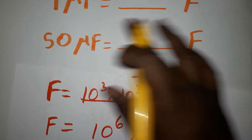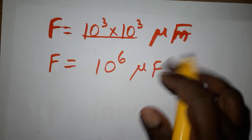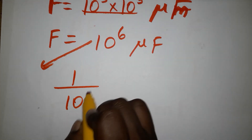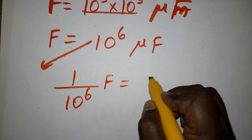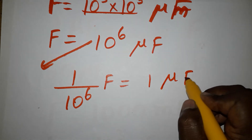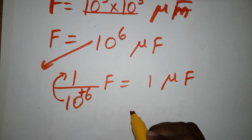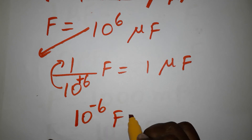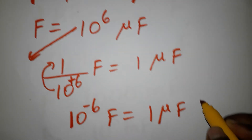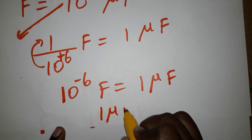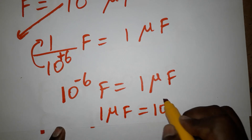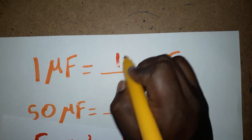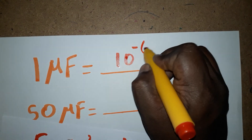Now, 1 micro farad is equal to how many farads? We bring it as a denominator using cross multiplication: 1 divided by 10 power 6 farads equals 1 micro farad. Moving from denominator to numerator, plus 6 changes to minus 6. So 10 power minus 6 farads equals 1 micro farad — that is our answer.